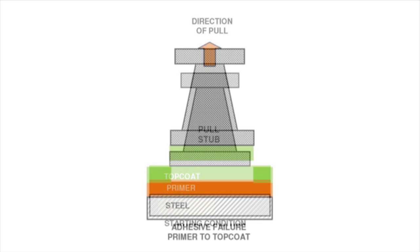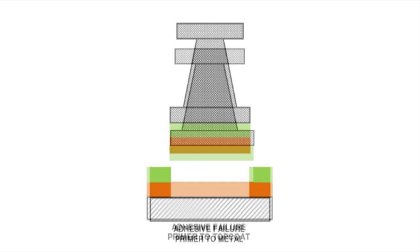First, you are testing the adhesion of the coating system to the substrate, or the adhesion of the coating layers to each other in a multi-coat system. In both of these cases, you are testing the adhesion strength of a coating or the bond of the layers to one another and to the substrate.